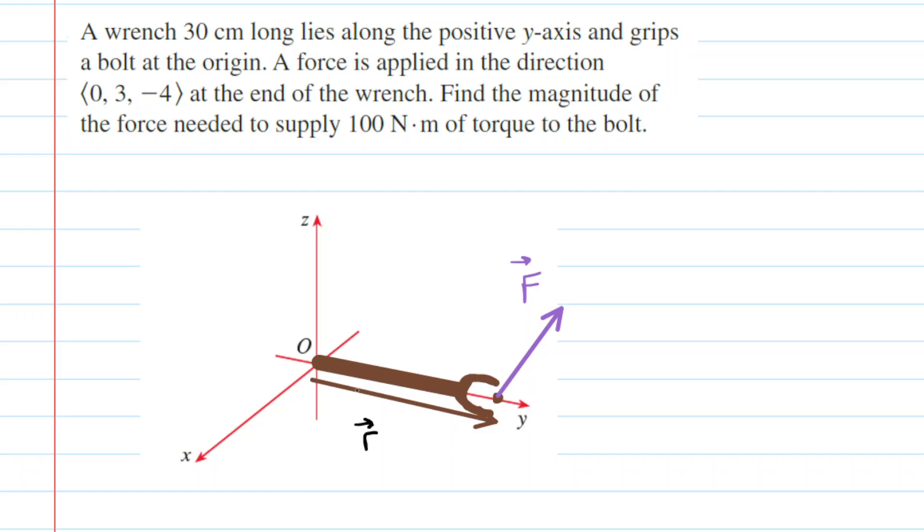So we've gone ahead and have drawn this wrench lying along the positive y-axis, and what we would like to do is establish coordinates for each end of the wrench. So the left end of the wrench is located at the origin, so the coordinates are (0, 0, 0).